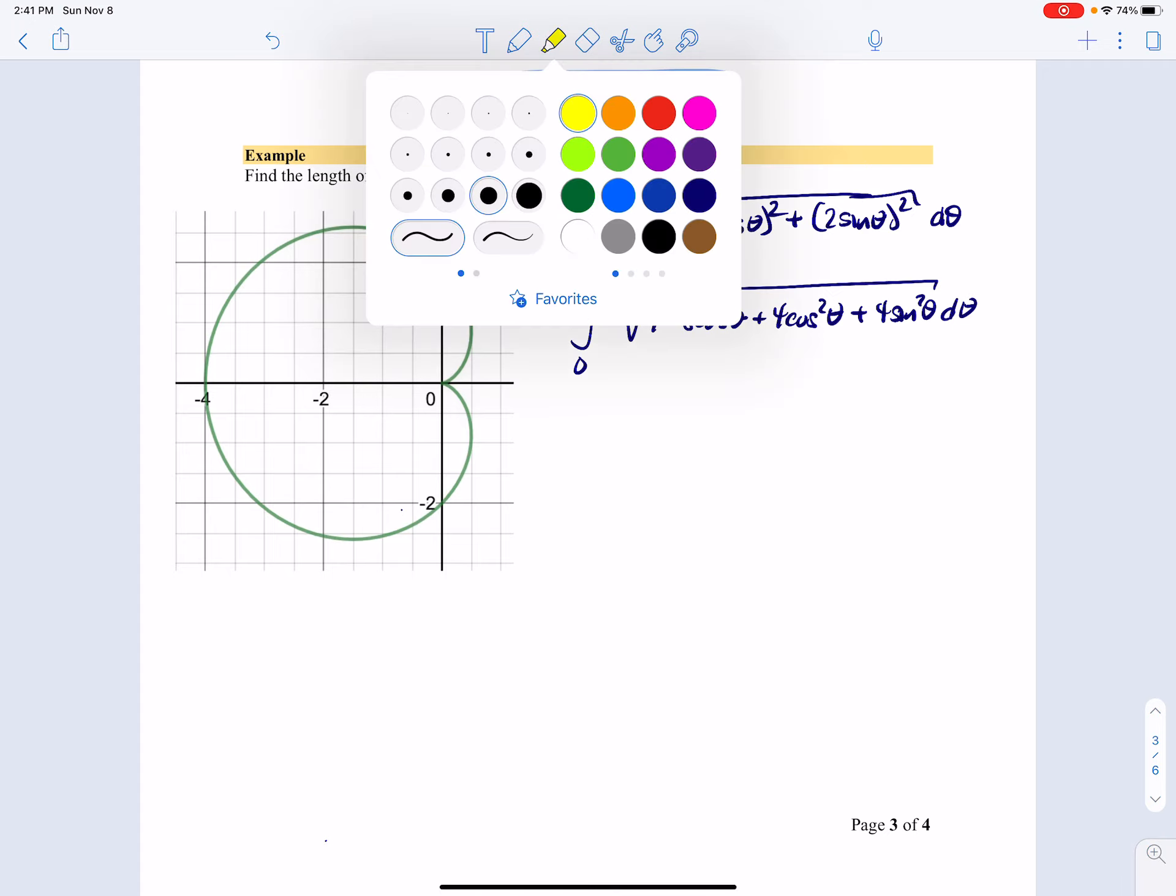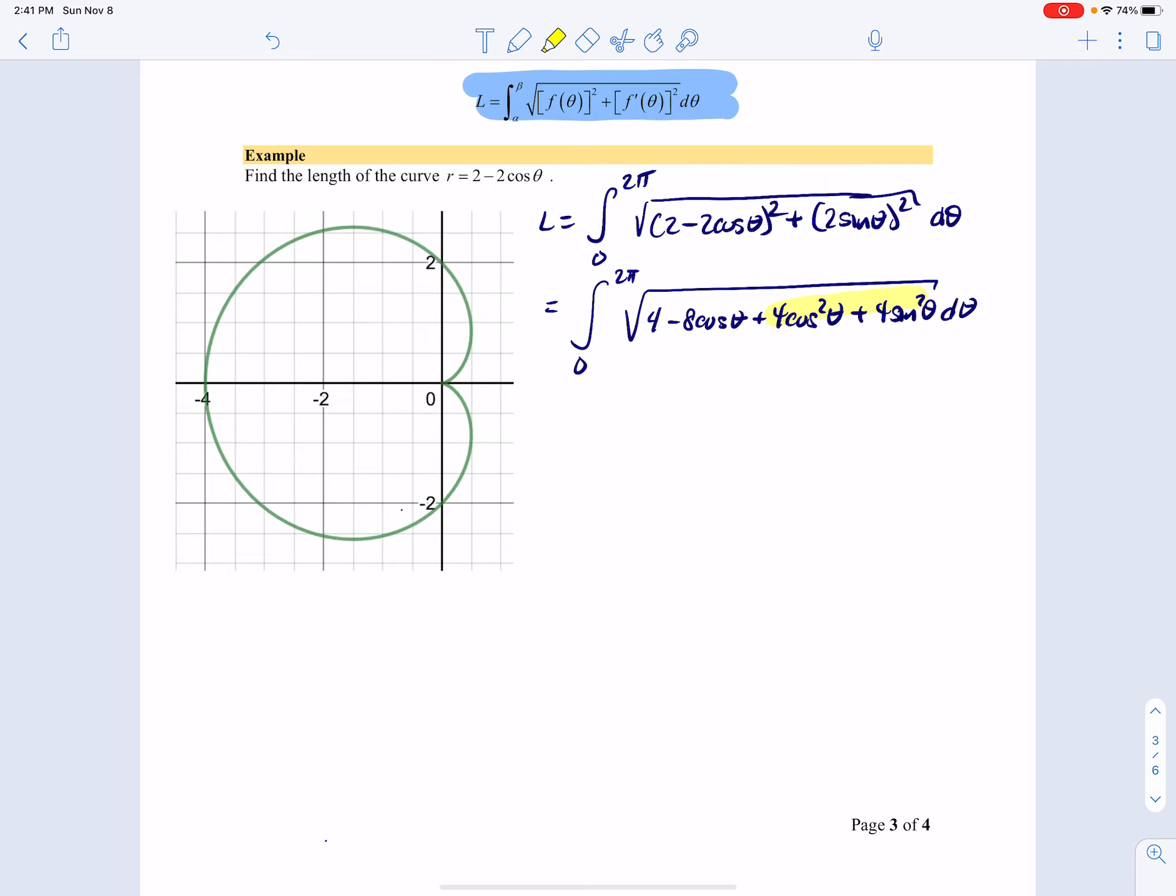And we hopefully recognize by now, whenever we see a cosine squared and a sine squared together, we know that that's 1. So that means this is 4.